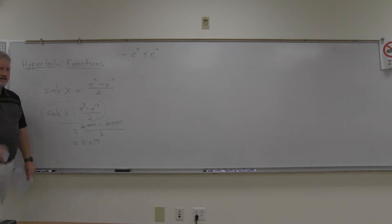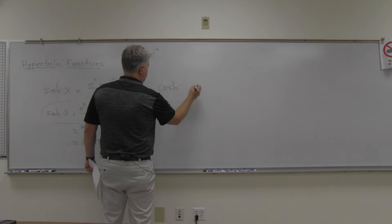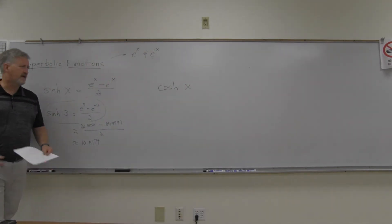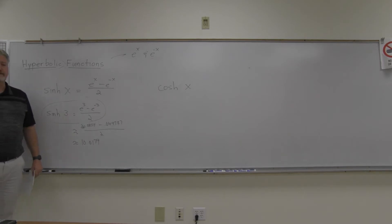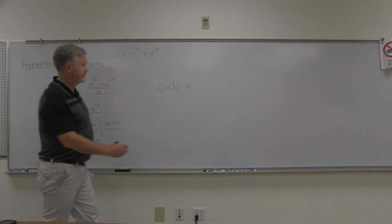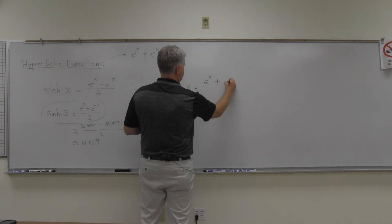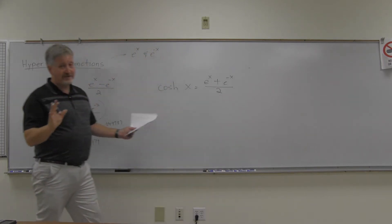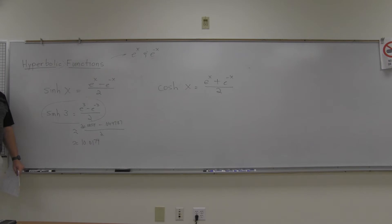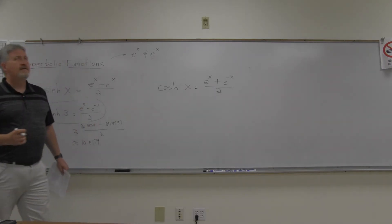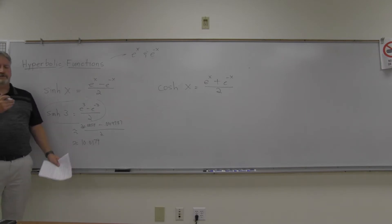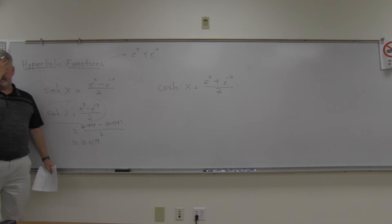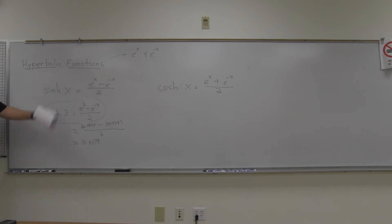The other key function is the hyperbolic cosine, usually pronounced 'cosh.' The hyperbolic cosine is: cosh(x) = (eˣ + e⁻ˣ) / 2. With sinh and cosh defined, you can derive all the other hyperbolic functions, just as in regular trig where everything can be expressed in terms of sine and cosine.